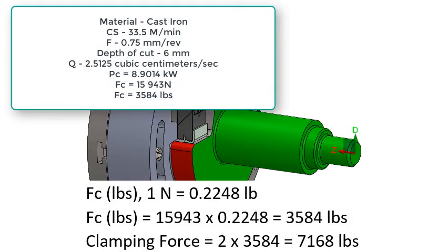The final step for North America is to convert the force from newtons to pounds. Multiply the cutting force in newtons times 0.2248 to get 3,584 pounds. Therefore the clamping force must resist double that, or 7,168 pounds.